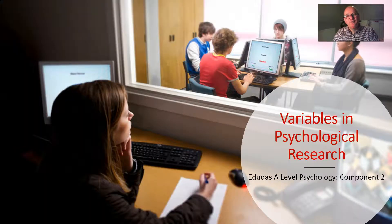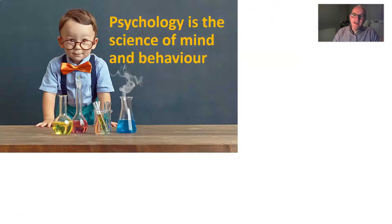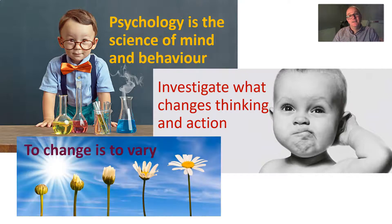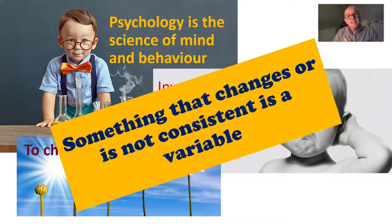Hi, my name's Ed Nolan and I'm an A-level psychology teacher. In today's lesson we're going to look at how variables are used in psychological research. When we look at the term variable, let's consider the definition of psychology: it's a science of mind and behaviour. We're interested in what changes the way we think, feel and act. Another word for change is to vary, so all a variable is is something that changes.